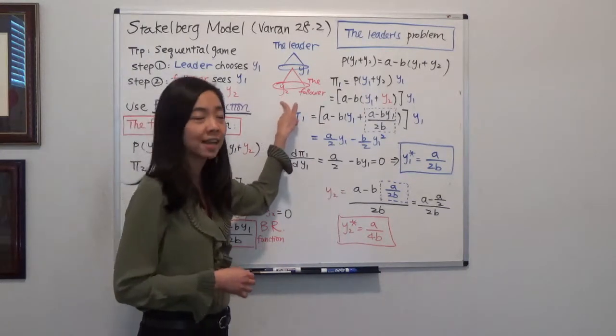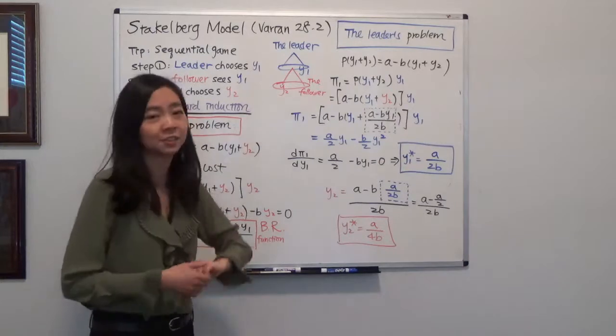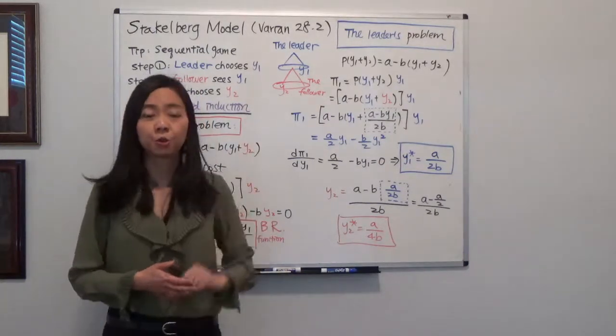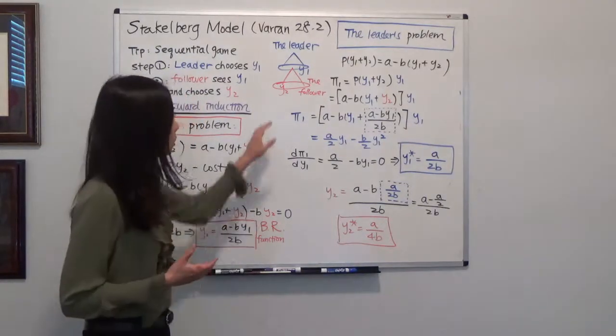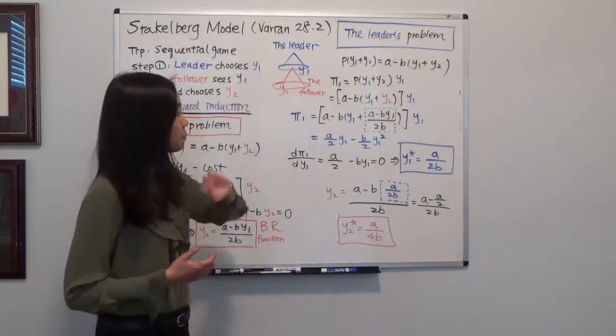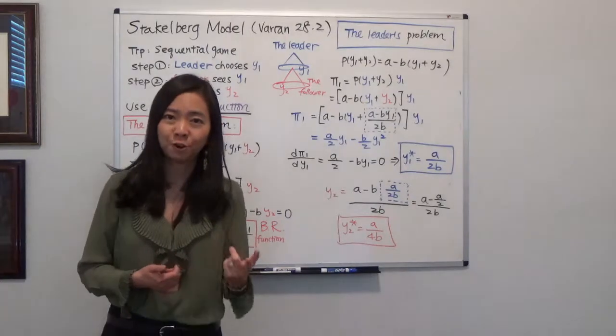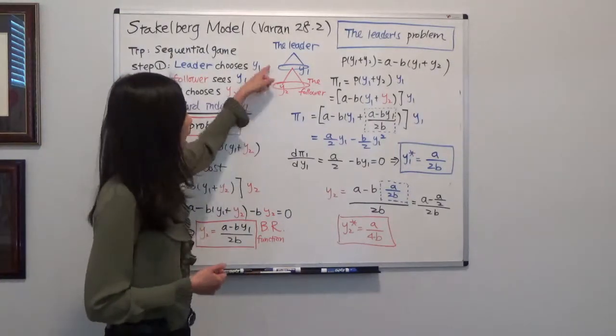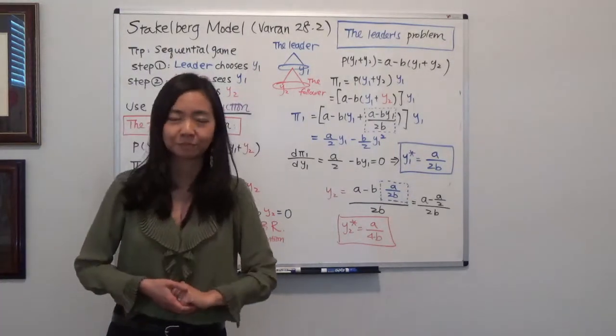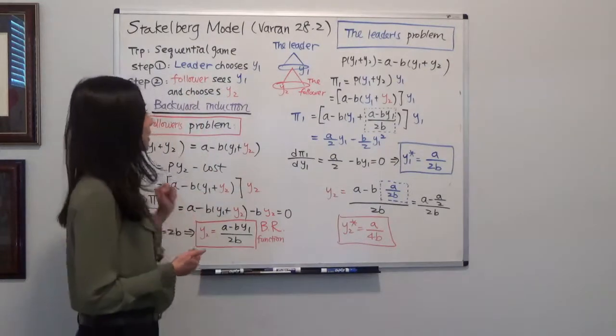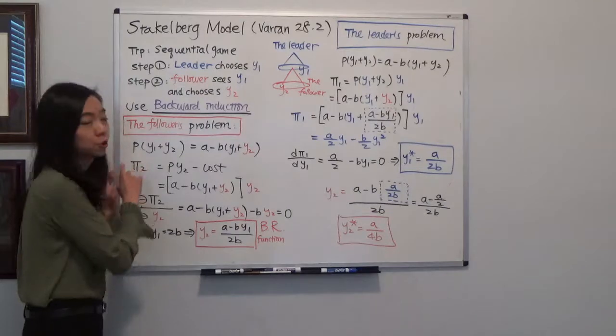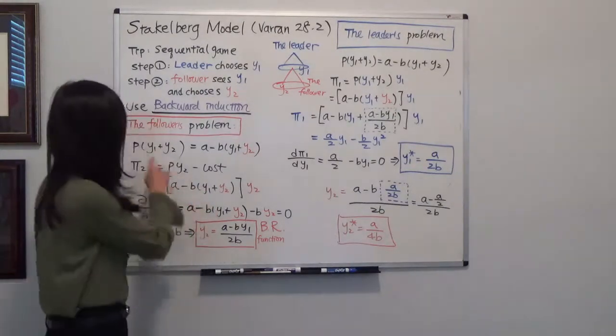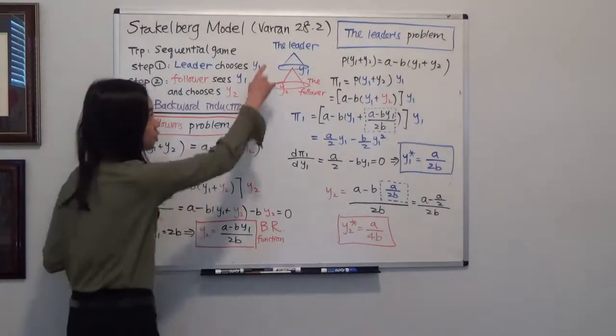Notice two things. First, this is a sequential game, therefore we're going to use backward induction to solve, meaning we're going to solve firm two's profit maximization problem first, then we're going to go back to solve the leader's problem. The other issue is that since we have a duopoly, the price is going to be a function of both Y1 and Y2, meaning both of their output.